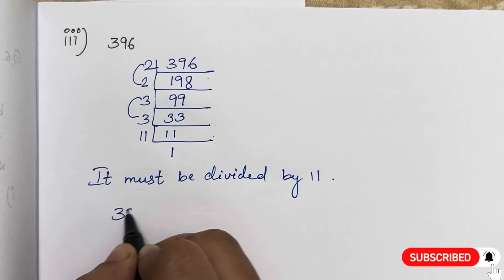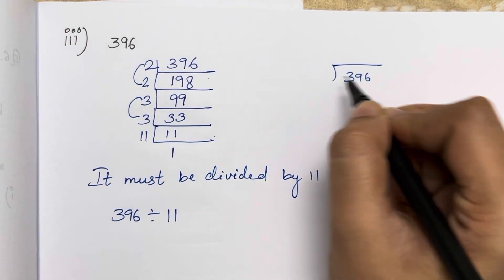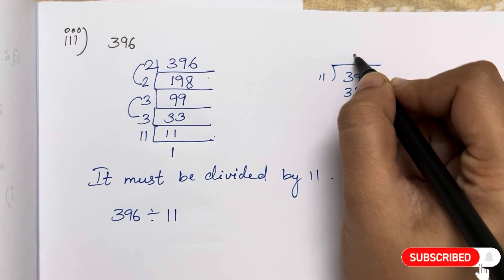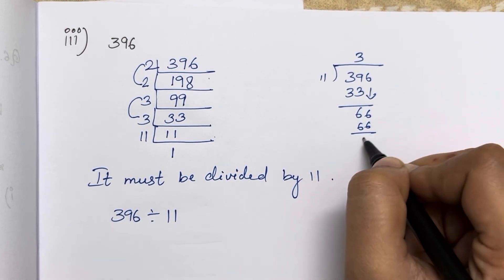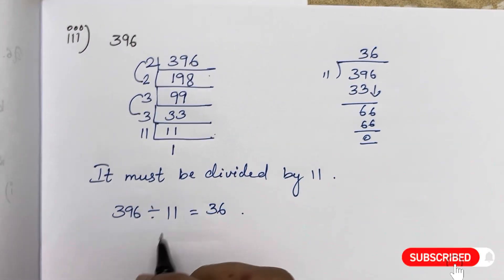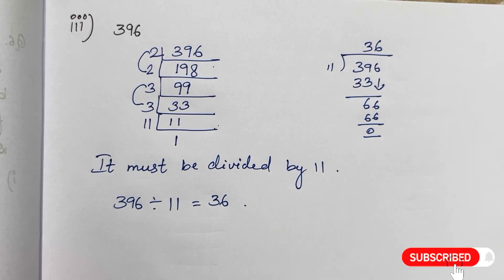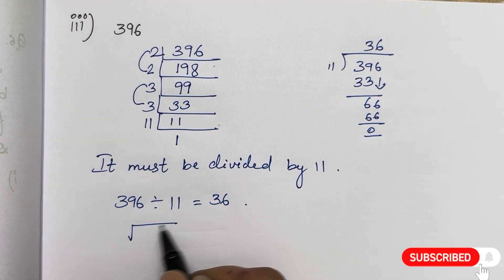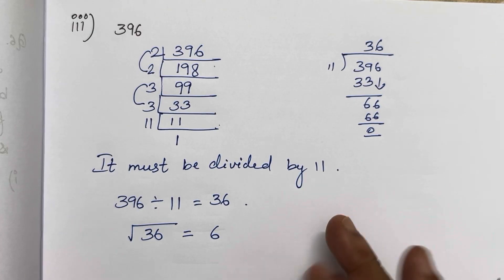396 divided by 11 gives 36. Now we will find the square root. The square root of 36 is 6, because 6 into 6 is 36.